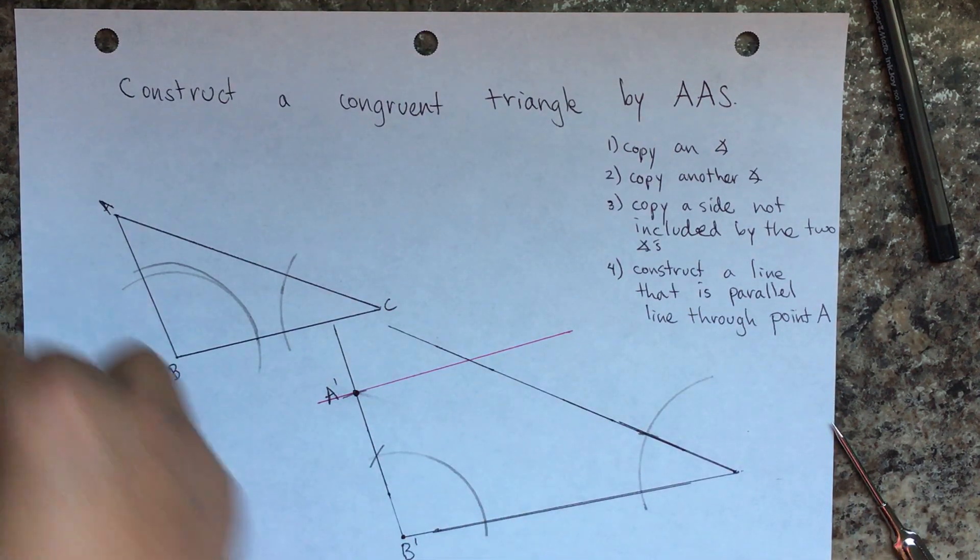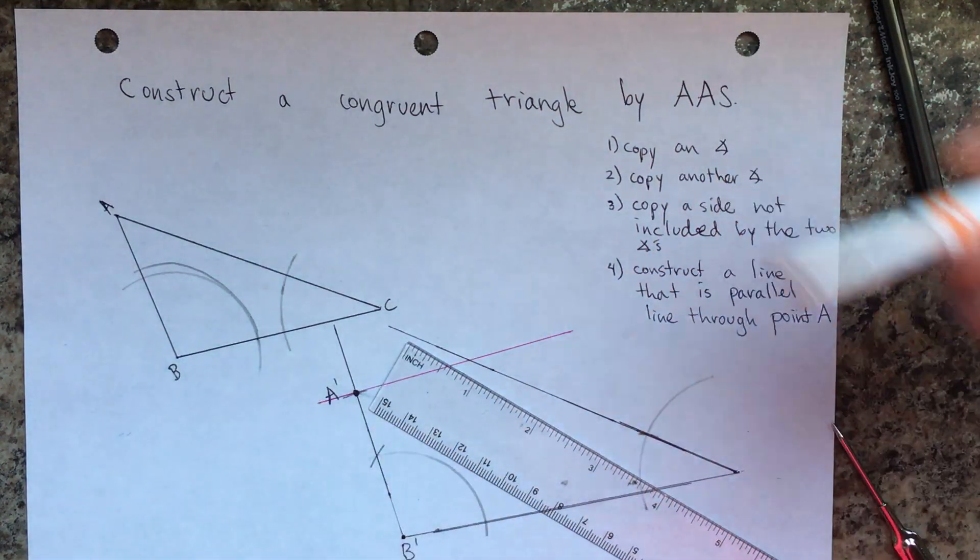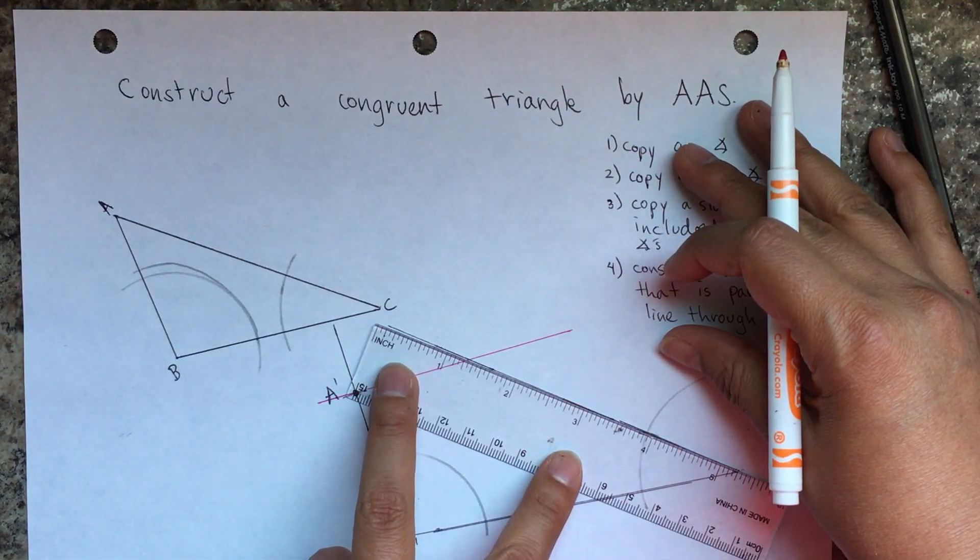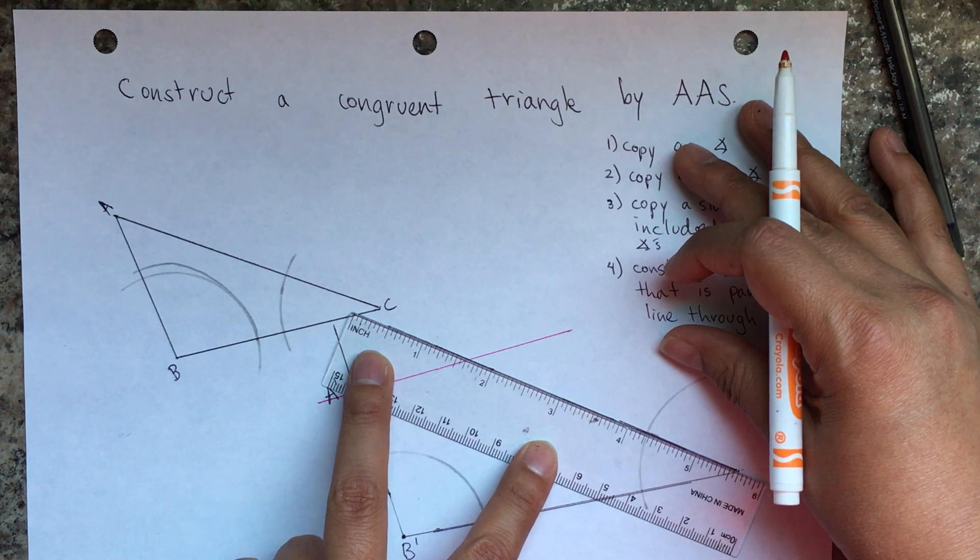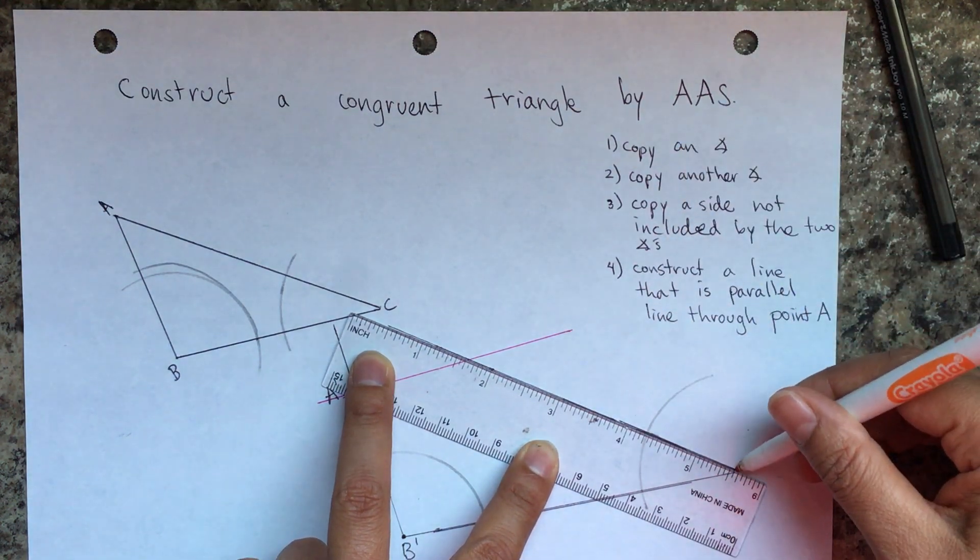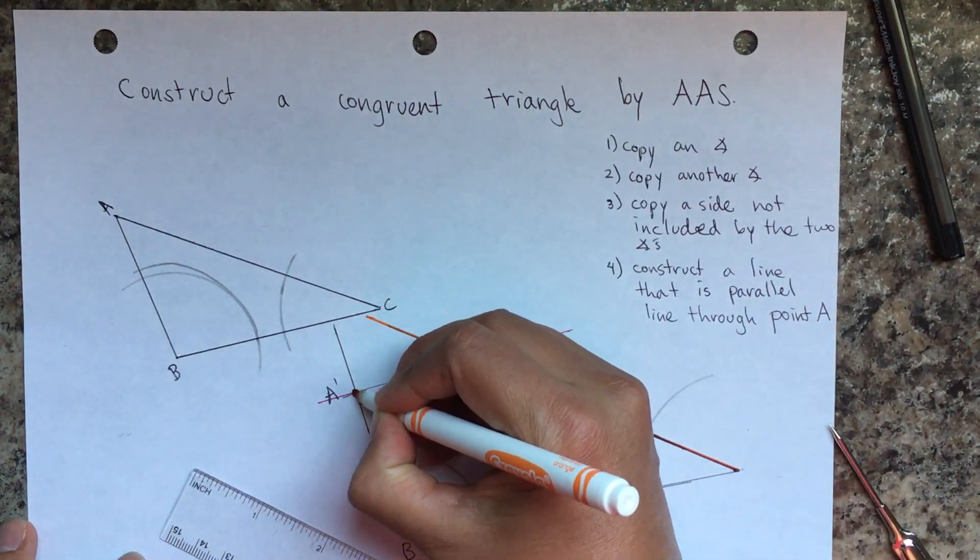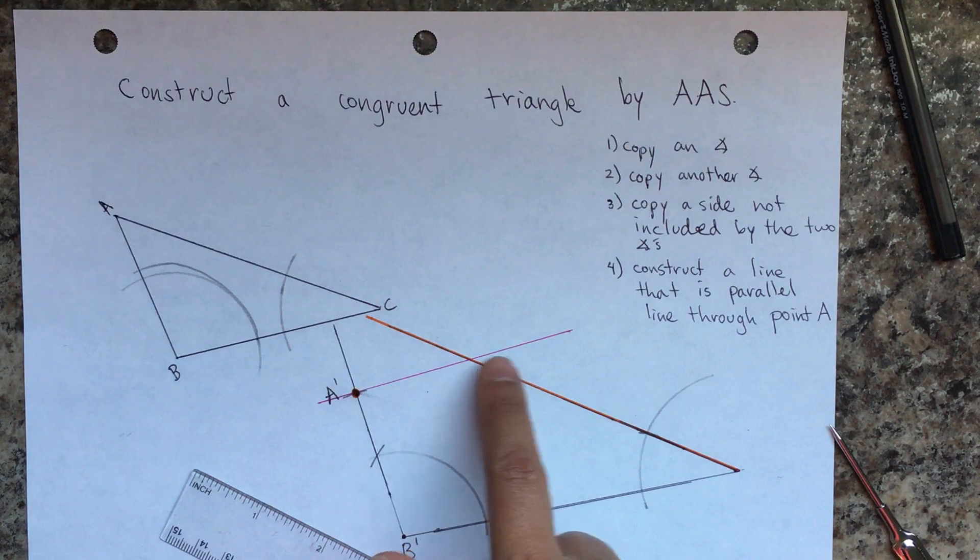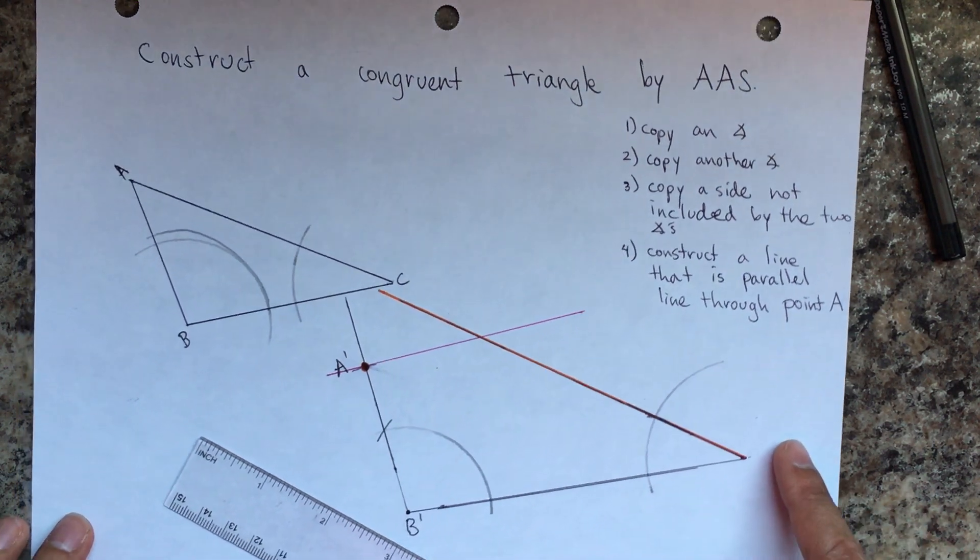Maybe I'll highlight the ones that we need to pay attention to. So the pink and the orange, the pink, the orange, and point A. So let me draw also point A. So those are the three pieces of information that we need to pay attention to right now.